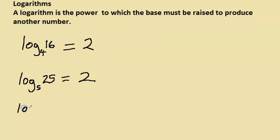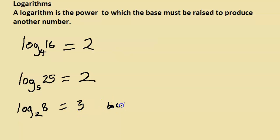Let's do a couple more. Log 8 base 2 — what is it? It's the power to which the base 2 must be raised to get 8, and that power is 3. As you realize, a logarithm is really the opposite of exponential. The answer is 3 because 2 to the power of 3 gives you 8.